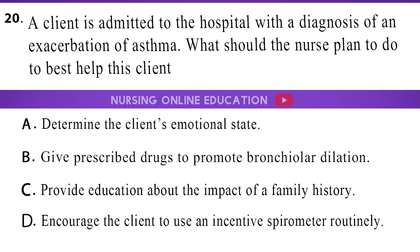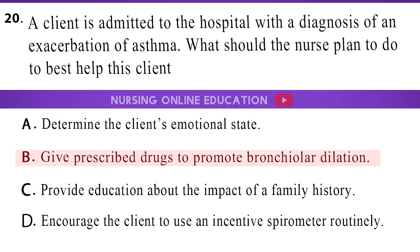Question 20. A client is admitted to the hospital with a diagnosis of an exacerbation of asthma. What should the nurse plan to do to best help this client? A. Determine the client's emotional state. B. Give prescribed drugs to promote bronchiolar dilation. C. Provide education about the impact of a family history. D. Encourage the client to use an incentive spirometer routinely. The answer is option B: Give prescribed drugs to promote bronchiolar dilation.